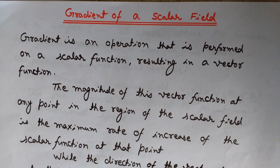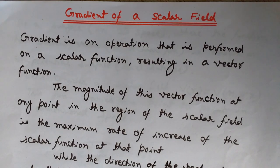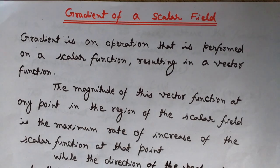An example of a scalar field is the temperature field. If we are standing at a certain place and move horizontally — say ten kilometers in the horizontal direction — we will not see much change in temperature. But if we move upwards or downwards into the earth ten kilometers, we will see a significant change in temperature. Moving vertically upward, temperature varies at the fastest rate, giving the maximum rate of change.